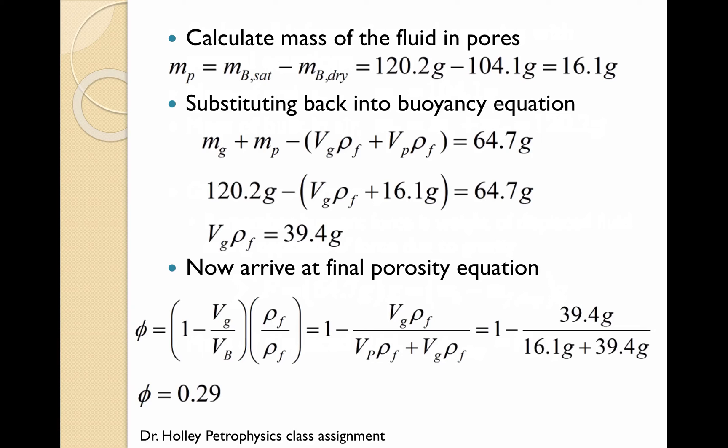Substituting the given values into the buoyancy equation, we are able to calculate the mass of the fluid in terms of the volume of the grains, which is equal to 39.4 grams. Using the general porosity equation with the addition of the fluid density term, we know that the mass of the fluid in terms of the volume of the grain as well as the mass of the fluid in terms of the volume of the pores. From here, we just place these into the general equation and arrive at a porosity value of 0.29.